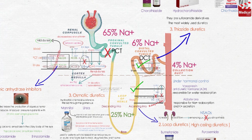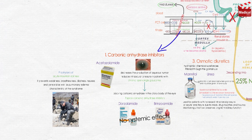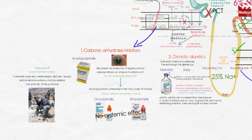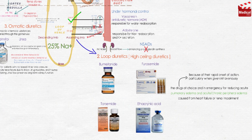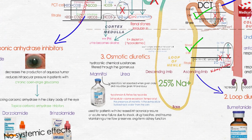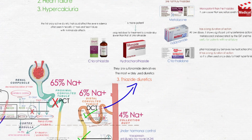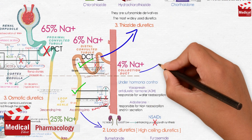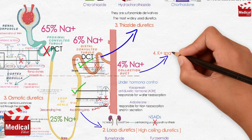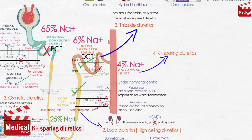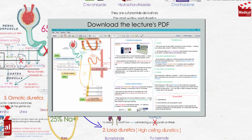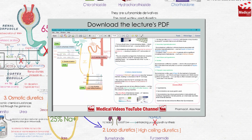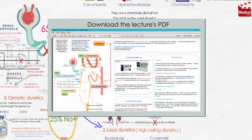In the previous two lectures we discussed four categories of diuretics: carbonic anhydrase inhibitors, loop diuretics, osmotic diuretics, and thiazide diuretics. Today we'll discuss the potassium-sparing diuretics. As usual, you'll find the lecture's PDF down in the description.